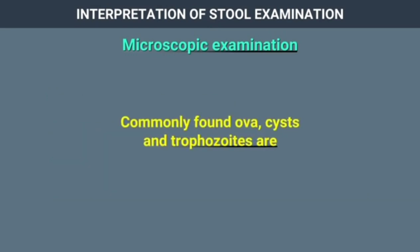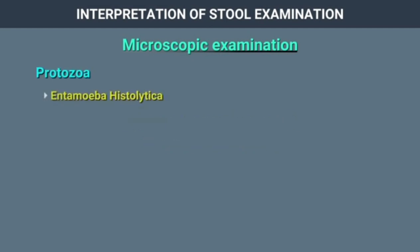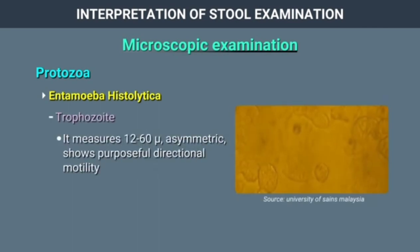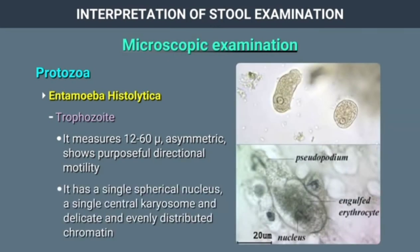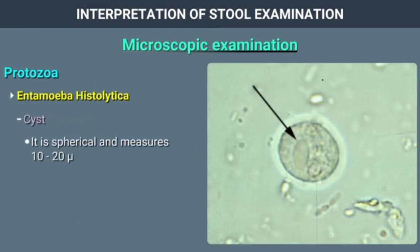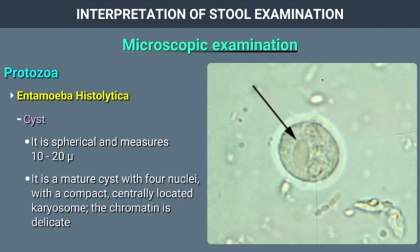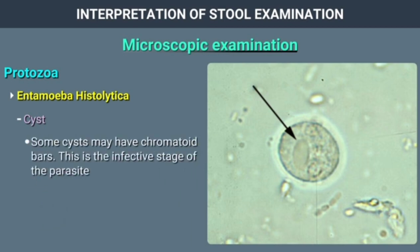Entamoeba histolytica trophozoite measures 12 to 60 microns in size. It is asymmetric, shows motility, and has a single spherical nucleus, a single central karyosome, and delicate evenly distributed chromatin. The cyst is spherical, measuring 10 to 20 microns. The mature cyst has 4 nuclei with a compact centrally located karyosome and delicate chromatin. Some cysts may have chromatoid bars. This is the infective stage of the parasite.